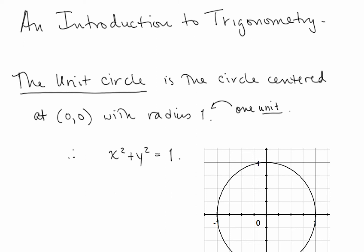This is an introduction to trigonometry, covering the definitions and evaluations with the sine and cosine functions. We're going to start by talking about the unit circle. The unit circle is the circle centered at the origin with radius 1. And since the radius is 1 unit, we're calling it the unit circle.